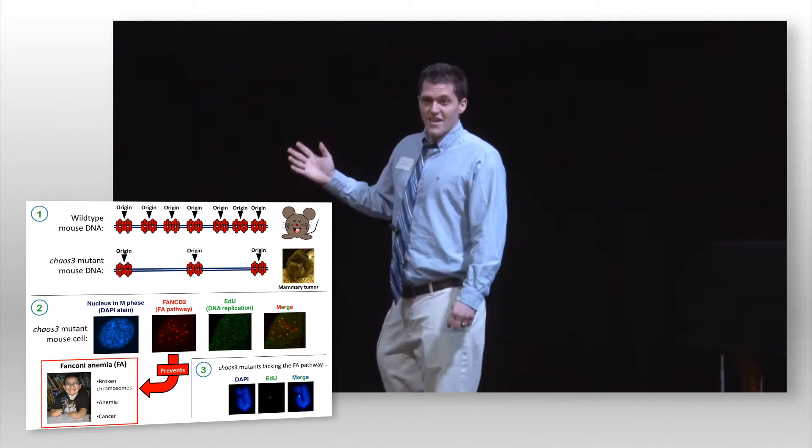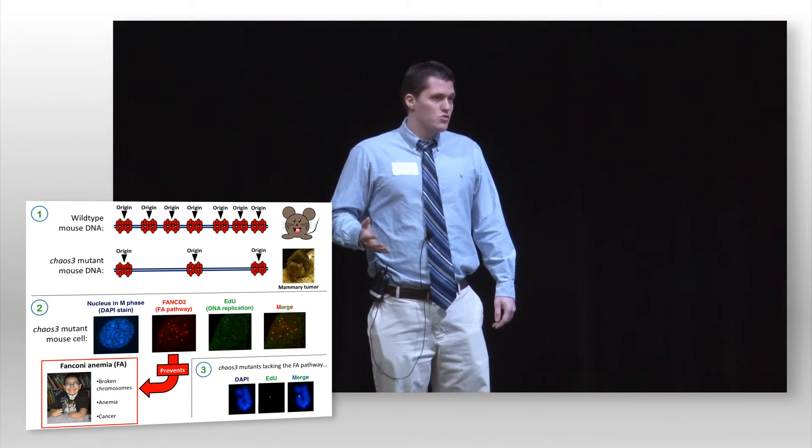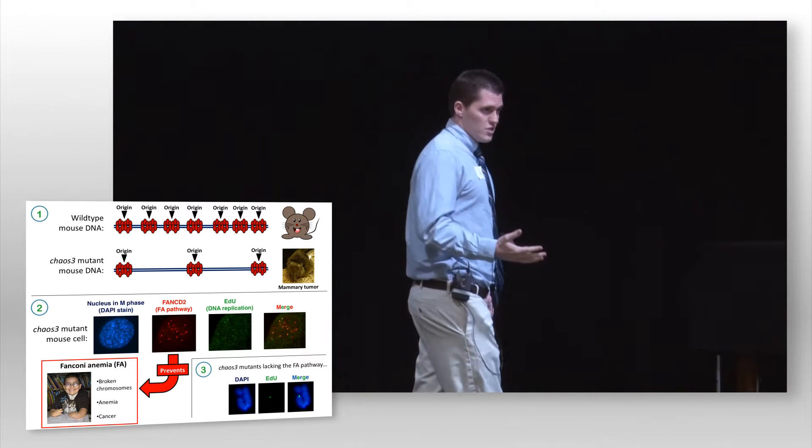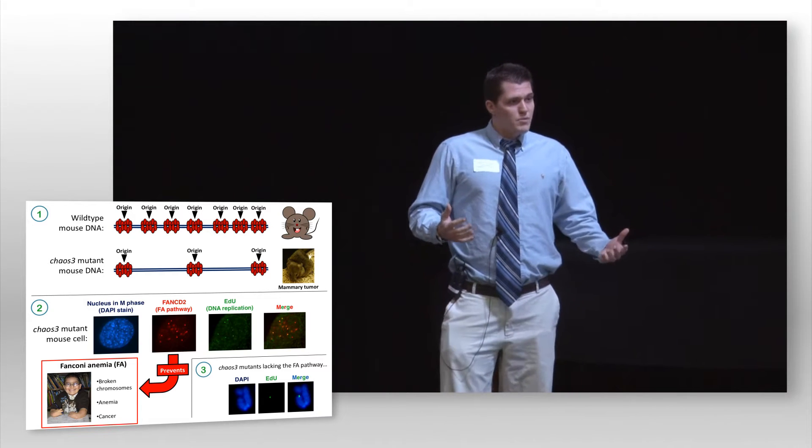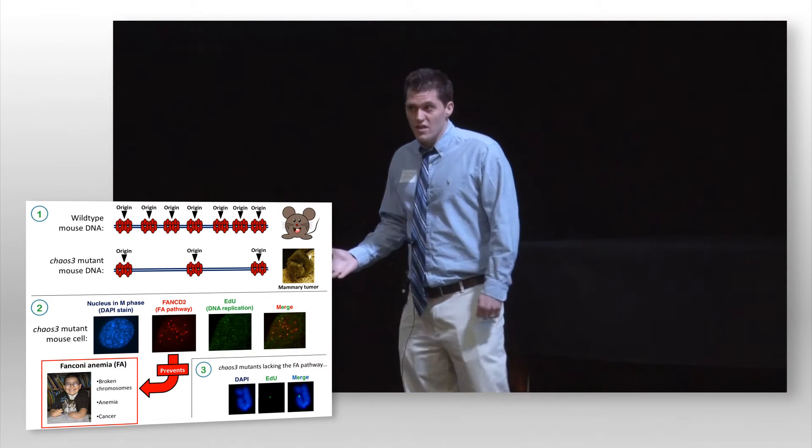As you can see, CHAOS-3 mice have a greatly reduced number of potential origins. But because origins exist in such a great excess, replication can still proceed and the mice are born healthy.